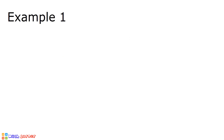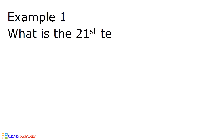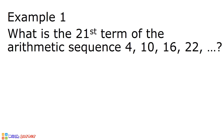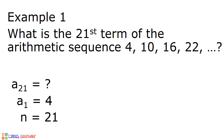Example number 1. What is the 21st term of the arithmetic sequence 4, 10, 16, 22, and so on? Our first step in solving this problem is to determine all the given values. Since we are looking for the 21st term, that is denoted by a sub 21. 4 is our first term or a sub 1. n is equal to 21, and d is equal to 6.